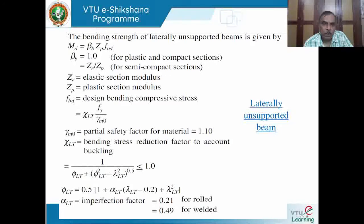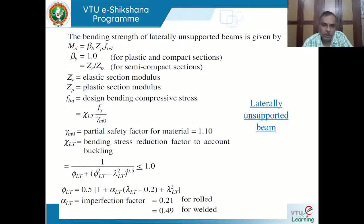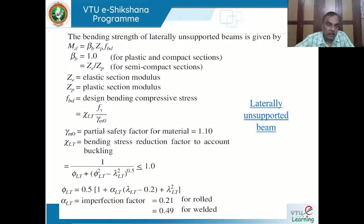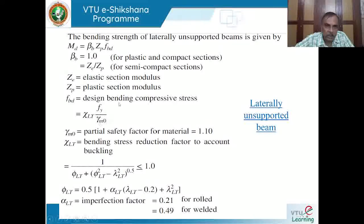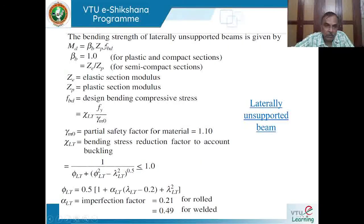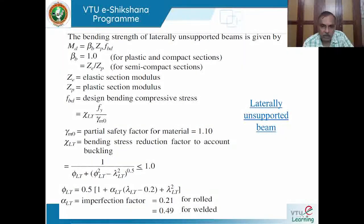βB = 1 for plastic and compact sections, and βB = ZE/ZP for semi-compact sections. FBD = (FY/γM0) · χLT, where χLT is the bending stress reduction factor to account for lateral torsional buckling. Since χLT < 1, the permitted stress is always less than FY/γM0. γM0 = 1.1 is the partial safety factor for material strength.